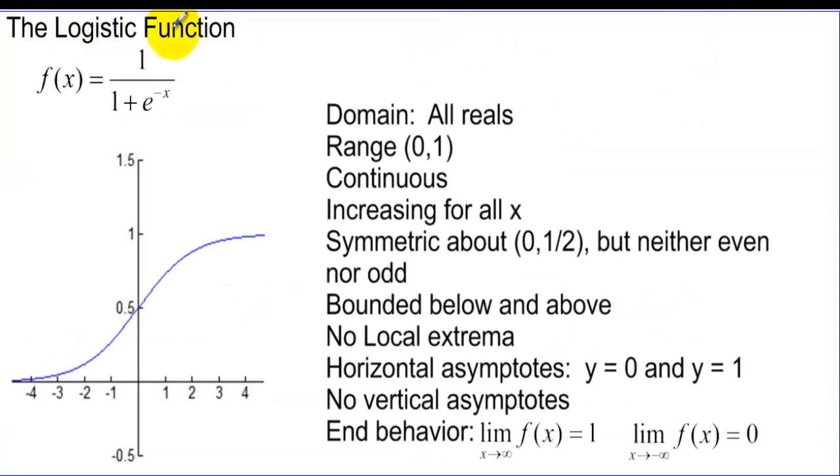The logistic function, 1 over 1 plus e to the negative x is the parent function. And it crosses through point 5 and it eventually levels out to 1. The domain is all reals. The range is 0 to 1. It's continuous and increases for all x.